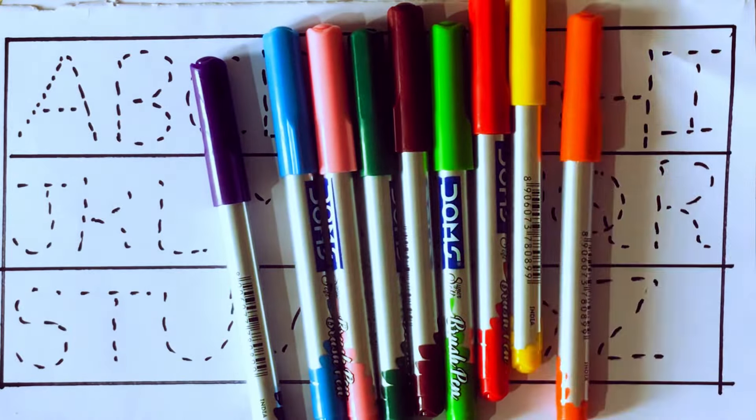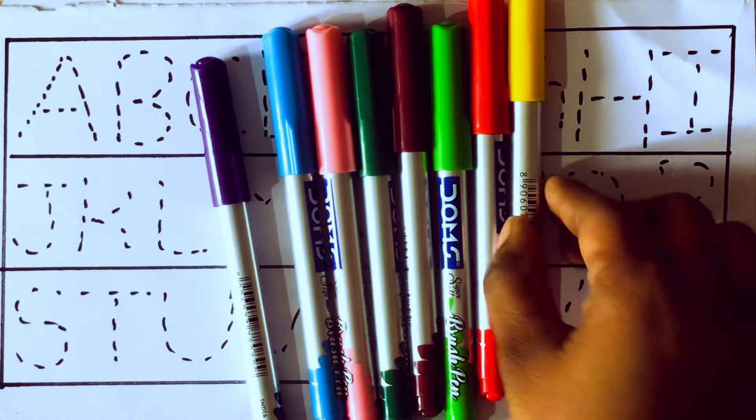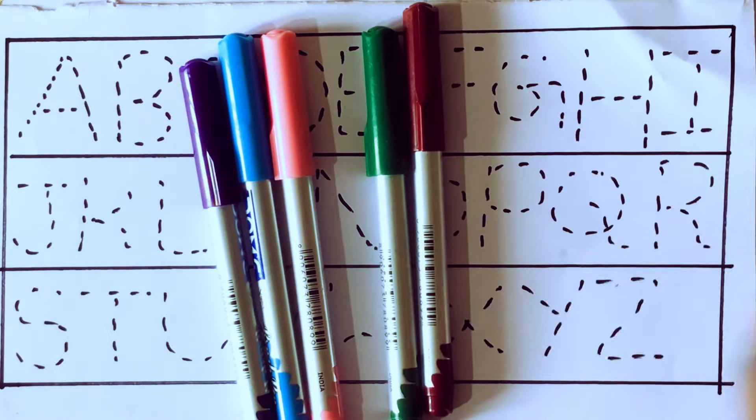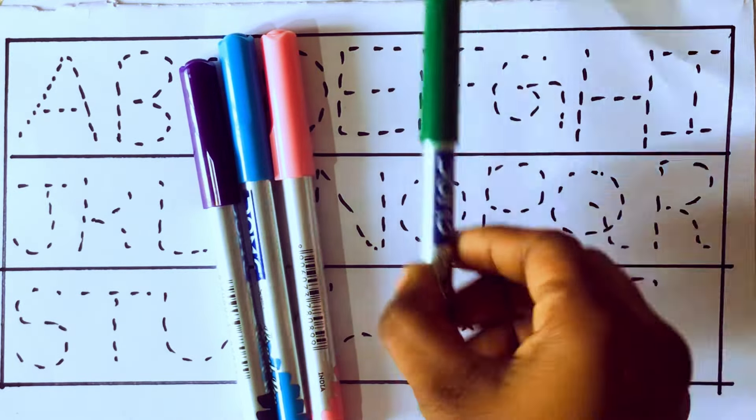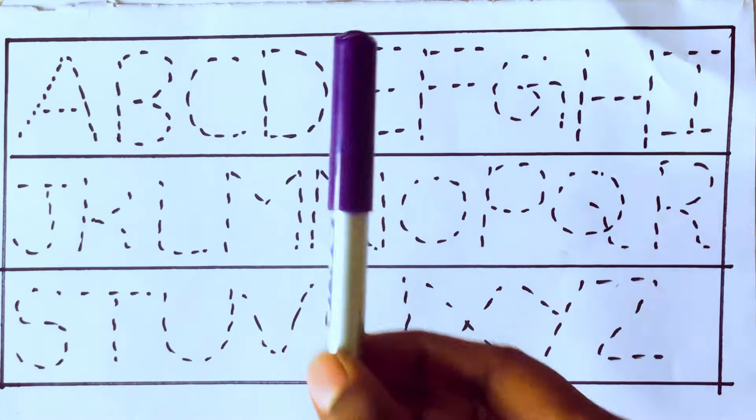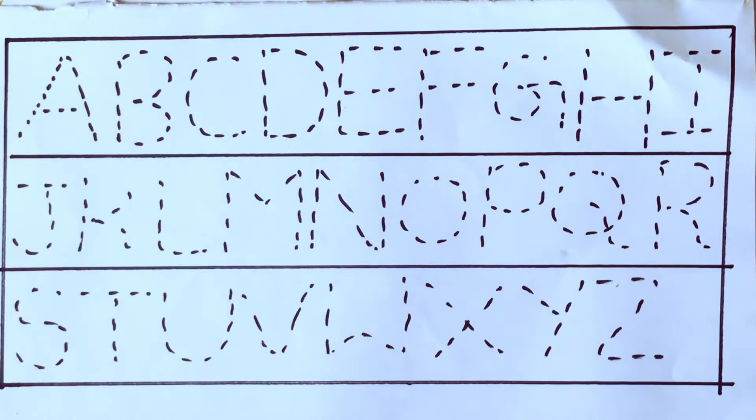Blue color, pink color, orange color, yellow color, red color, green color, brown color, green color, pink color, sky blue color and violet color. Let's draw the alphabets.